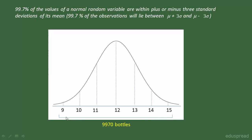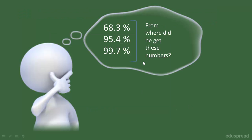Here, 9 ml is mu minus three sigma and 15 ml is mu plus three sigma. I hope you are clear with the intuition of what this property means. If you are thinking where these numbers like 68.3%, 95.4%, and 99.7% come from, and why it is 68.3% and not 71.3%, hold your thoughts for a while — I'll cover this in my upcoming lectures.